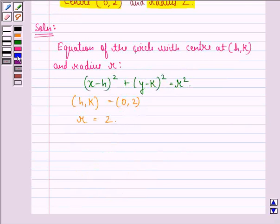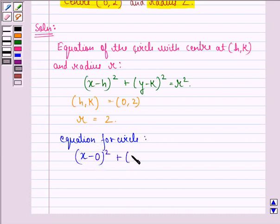So applying this formula here using h, k and r as 0, 2 and 2 respectively, we have equation for circle is given by (x minus 0) the whole square plus (y minus 2) the whole square is equal to 2 square.